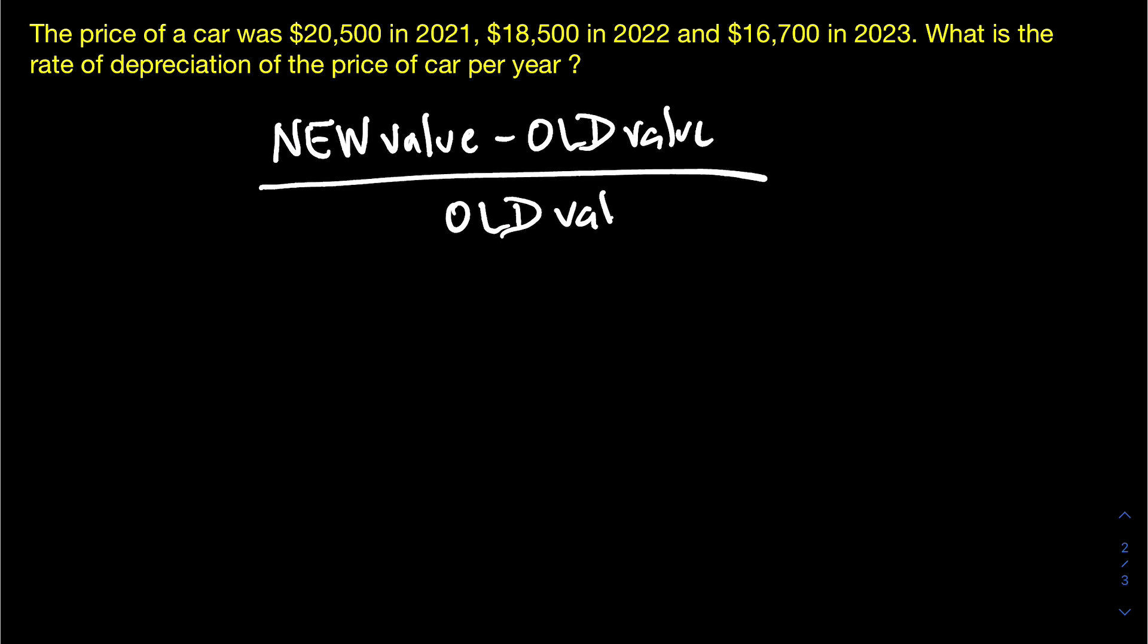So the formula that you would use is new value minus old value divided by old value multiplied by 100. And that's going to give you the percent change. In this case, we're looking at the depreciation value, meaning how much did the car lose in value.